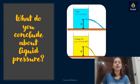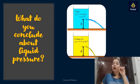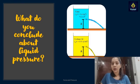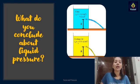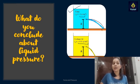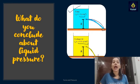In one beaker there is water and in the other there is cooking oil. The density of water is 1 gram per centimeter cube. The cooking oil has a density of 0.93 grams per centimeter cube. Water has greater density and the liquid pressure is more in water — the distance covered by water is greater than that covered by cooking oil. So as density increases, liquid pressure increases.